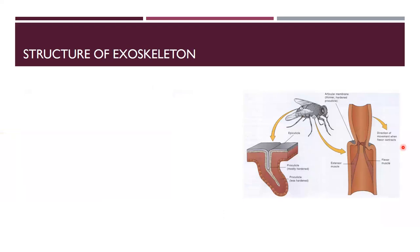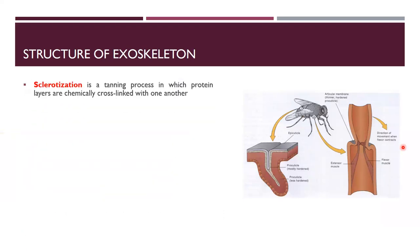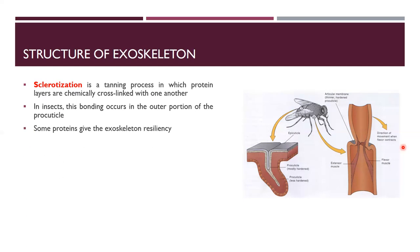Sclerotization is a tanning process in which protein layers are chemically cross-linked with one another — this is a hardening process. The protein layers are cross-linked and different minerals are deposited in them, so the exoskeleton becomes hard. Some proteins give the exoskeleton resiliency.